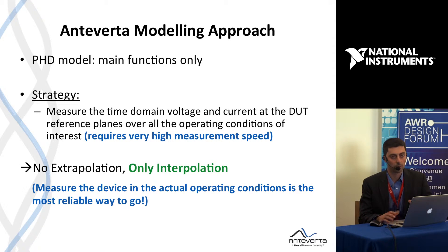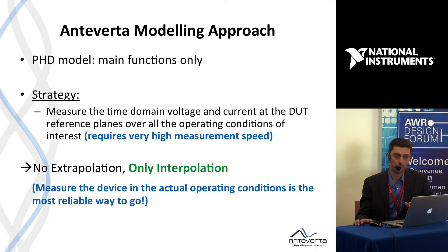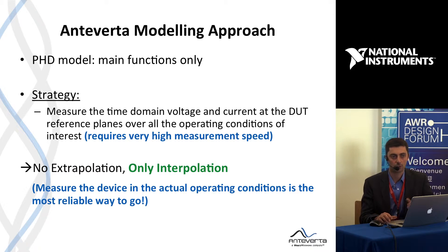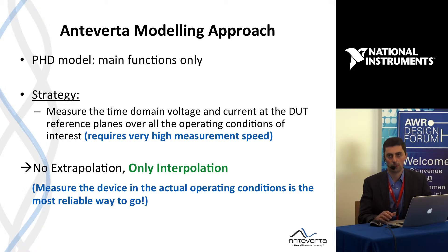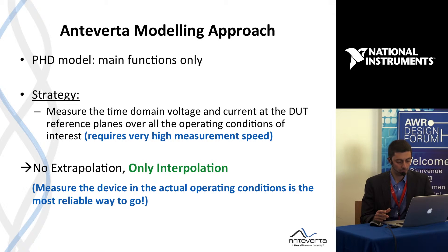Our modeling approach is fairly straightforward. We use a polyharmonic distortion model where we measure and characterize only the main function. With our active harmonic load-pull system, we can measure time-domain voltage and current waveforms at the DUT reference plane under multiple boundary conditions such as fundamental and harmonic source and load impedances, bias, frequency, and so on. Measuring the device under all these points can be extremely cumbersome, so very high measurement speed is important. Our advice is not to extrapolate — only use interpolation within the characterized space.